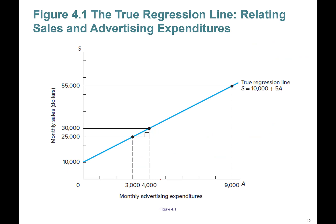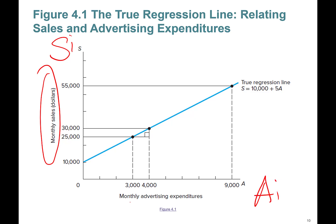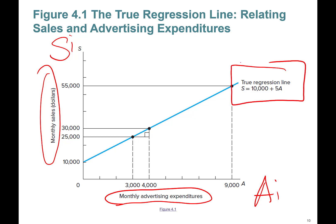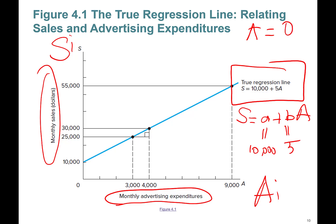Here is our example: the relationship between monthly sales S_i and monthly advertising expenditure A_i. Imagine this is the true relationship between monthly sales and advertising spending. So S = A + B·A_i — this is the true relationship. If advertising spending equals zero, sales are going to be ten thousand dollars.